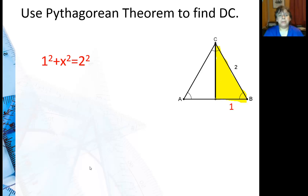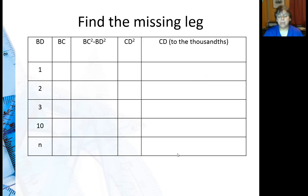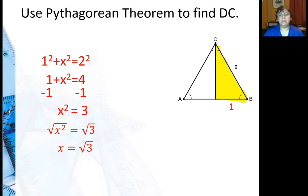I'm going to use Pythagorean theorem. 1 squared plus x squared equals 2 squared. 1 plus x squared is 4, subtract 1 from both sides. And I get x squared is 3. So that means x is the square root of 3. So again this is important to note, x is the square root of 3.